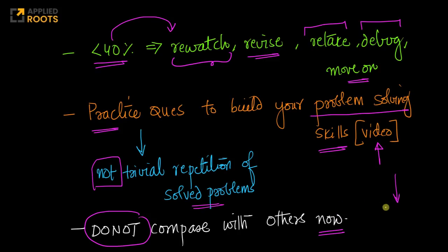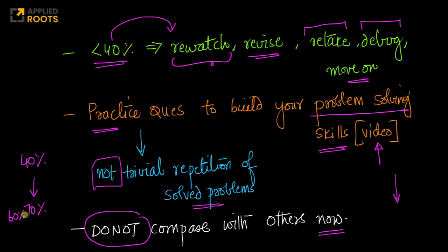You can compare results come November or December when you're taking mock tests and grand tests. At this point, you're competing with yourself. If you're getting 40% marks today, your objective is: how do I go from 40% to 60 to 70% in the next few months? The competition is not with others — the competition is with yourself. Please do not miss that. That's very, very important.